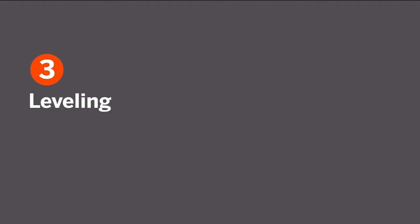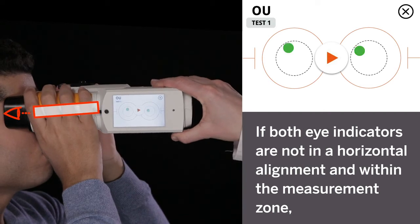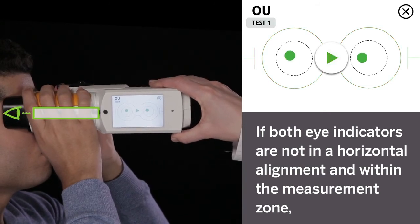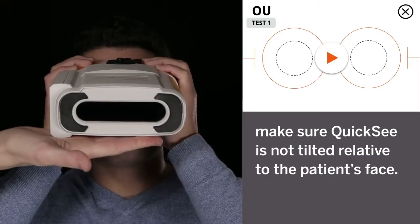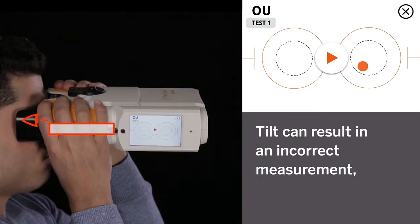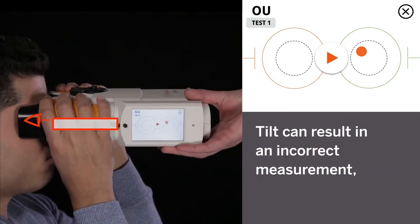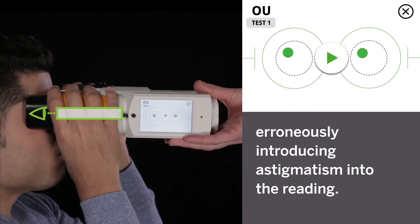Third, leveling. If both eye indicators are not in horizontal alignment and within the measurement zone, make sure QuickSee is not tilted relative to the patient's face. Tilt can result in an incorrect measurement, erroneously introducing astigmatism into the reading.